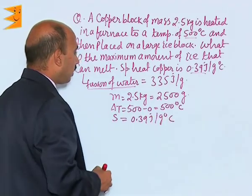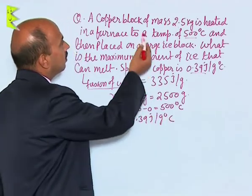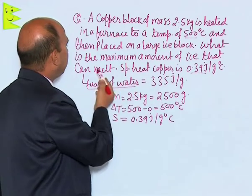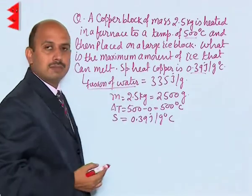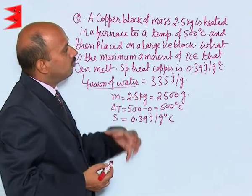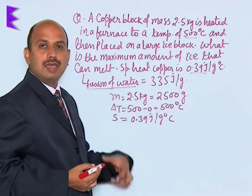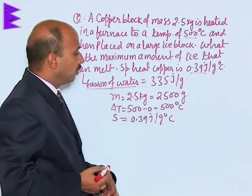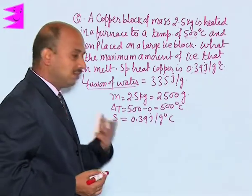So, here when this block of copper is placed on the ice, what happens? This copper will lose the heat and ice will gain the heat. So, suppose the whole copper comes to 0 degree Celsius.